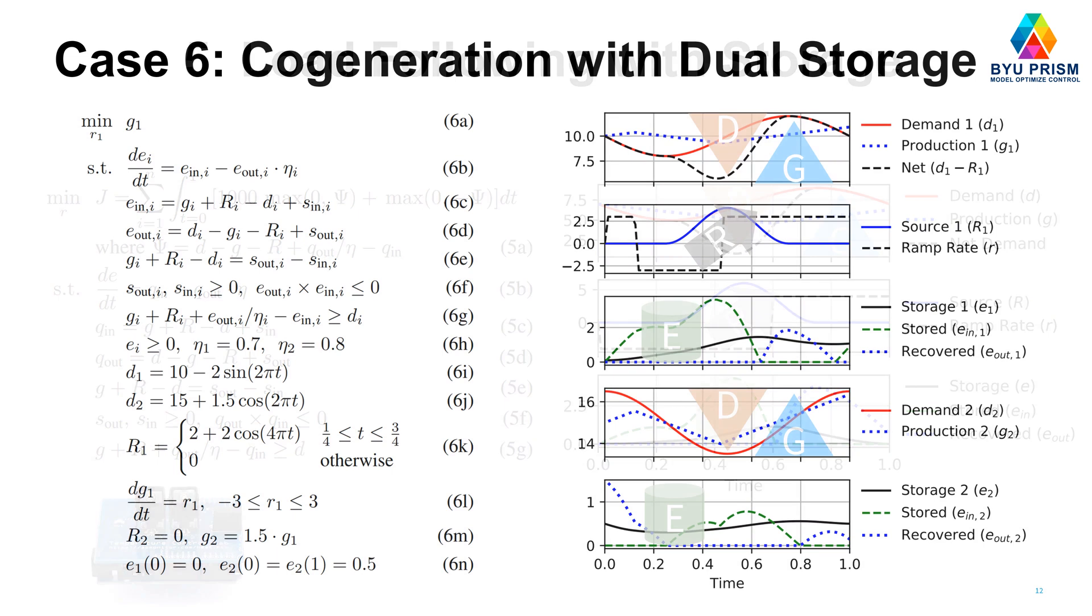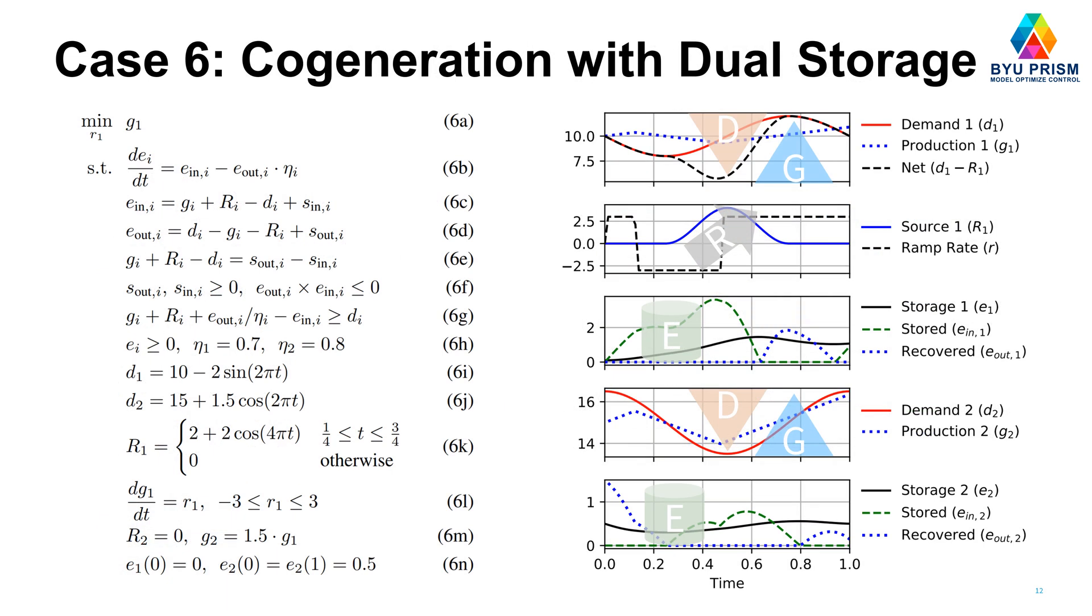I'll show a comparison of those two approaches after this sixth one, cogeneration with dual storage. So this one, it's more complicated, but still small enough that it could be a benchmark problem. But it shows some of the coordination that's needed between these producers and the energy storage. You've got two energy storage devices, maybe like hydrogen storage and a battery. And then this might be your generation here, the ramp rate on your generation.